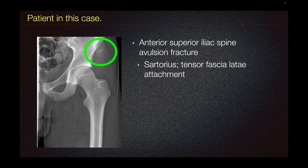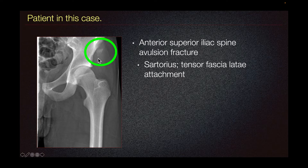The patient in this case presented with this left hip radiograph, demonstrating avulsion fracture of the apophysis at the anterior superior iliac spine. This is the attachment of the sartorius and tensor fasciae latae.